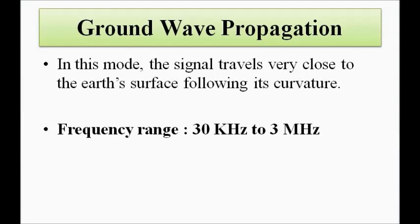In ground wave propagation, the signal reflects from the ground and through multiple such reflections it reaches the destination. The frequency range of this mode is from 30 kilohertz to 3 megahertz — this is a reference value, not absolute. Ground wave propagation happens very close to the surface of the earth through multiple reflections.